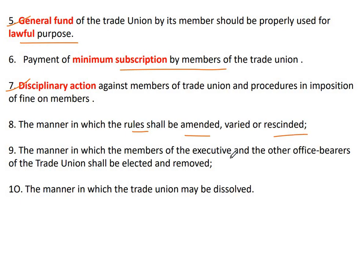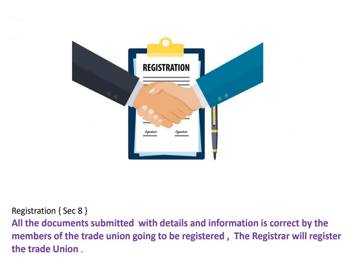The rules and regulations of the trade union can be amended, varied, or rescinded according to a prescribed manner. The manner in which members of executive and other office bearers shall be elected and removed must also be specified. Once all documents are submitted with correct details and information verified by the members of the trade union going to be registered, the registrar will register the trade union।